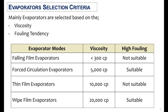Evaporators are mainly selected based on viscosity and fouling tendency. For falling film evaporators, viscosity should be less than 300 cp and the material should not contain high fouling materials. For forced circulation evaporators, viscosity can be up to 5000 cp and they are suitable for high fouling material.